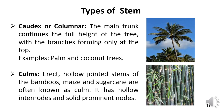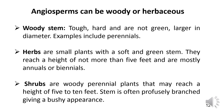Angiosperms can be woody or herbaceous. Woody plants contain secondary tissue — meaning bark — that surrounds the stem; they can live for several years, are tough and hard, not green in color, and are larger in diameter. An example of a woody stem is a perennial. Herbs are small plants with a soft and thin stem; they reach a height of not more than 5 feet and are mostly annuals or biennials. Shrubs are woody perennial plants that may reach a height of 5 to 10 feet, with stems often profusely branched giving a bushy appearance.